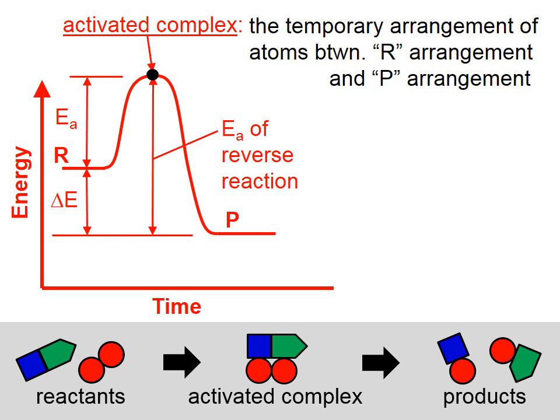It might look like what I've shown at the bottom of the screen, where for an instant all four of those atoms are in one clump, and then break into the final product form. That's what we mean by activated complex — it's the really temporary arrangement of atoms between the reactant arrangement and the product arrangement.